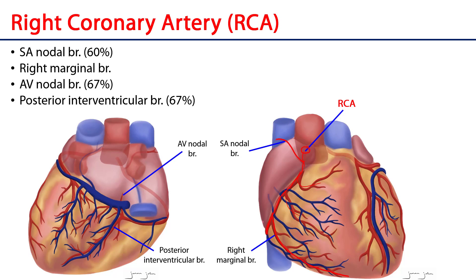The RCA then wraps around within the coronary sulcus and goes out typically to a region known as the crux of the heart. At the crux, two other branches arise: the AV nodal branch, or atrioventricular nodal branch, and the posterior interventricular branch. The posterior interventricular branch travels along the posterior interventricular sulcus and has septal branches that supply the interventricular septum.